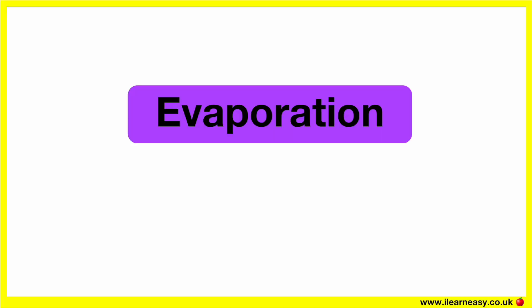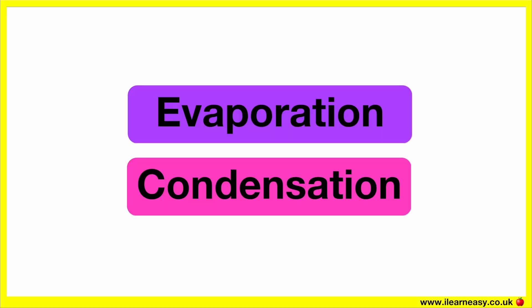Evaporation and condensation are opposite processes. They are part of the water cycle, which is a system that moves water through the atmosphere in different phases.